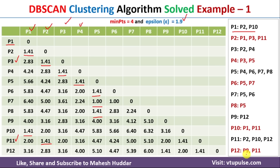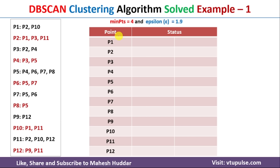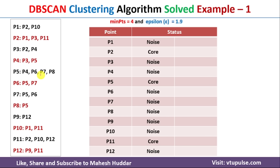Once we find all nearest data points, the next step is to identify core, border, and noise data points. For P1, we have two nearest neighbors P2 and P10, so including P1 itself we have 3 points — less than the minimum of 4, making P1 noise. For P2, including itself we have 4 data points, which equals the minimum, so P2 is a core point. Similarly, P3 and P4 are noise, P5 is core, and P11 is core. So we have three core data points: P2, P5, and P11.